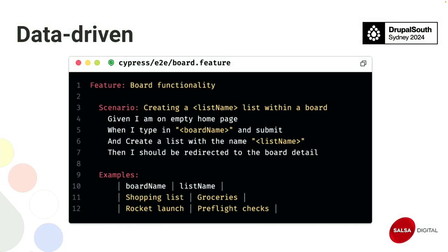For a data-driven example, you can pass arguments like a board name variable, and then define examples — for instance, board name is 'shopping list' and 'rocket launch'. So the same set of commands will run twice, because we defined two different values for the variable. It will check both tests and run them differently — it can happen that the first one passes and the second one fails.